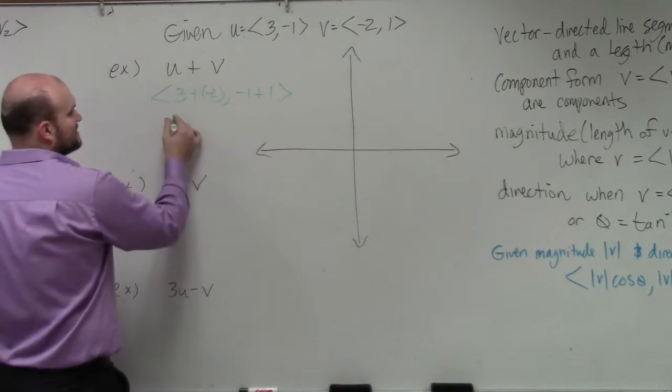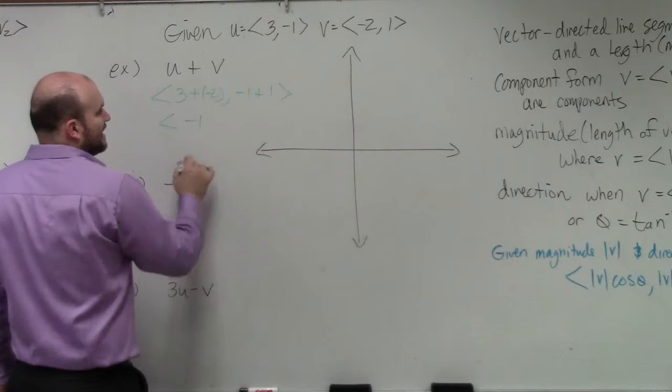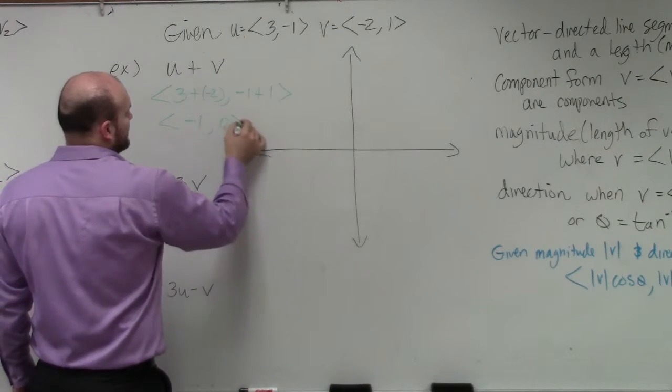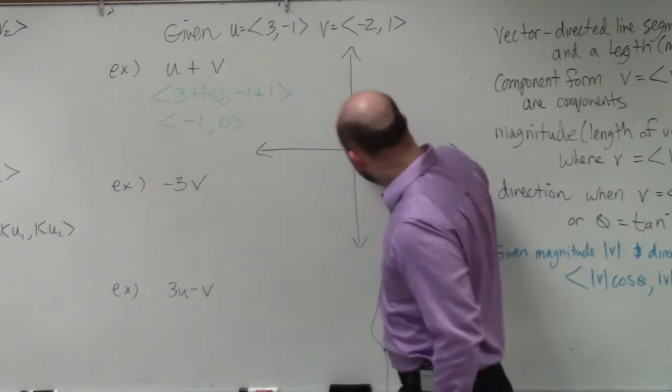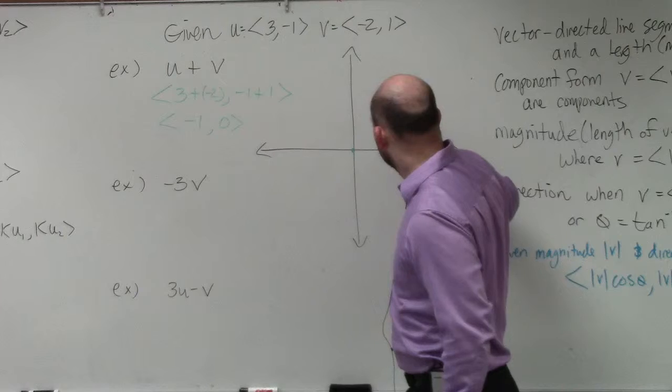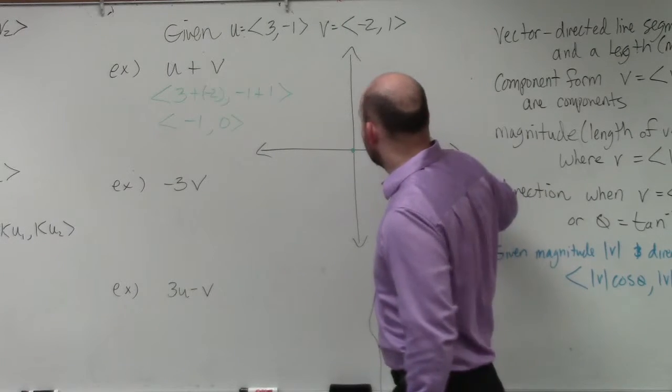So therefore, 3 plus negative 2 is going to get me negative 1, and then negative 1 plus 1 is going to give me 0. So remember, since this is in component form, component form we start at 0, and then we're going to end at 1.